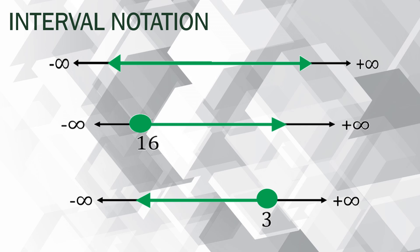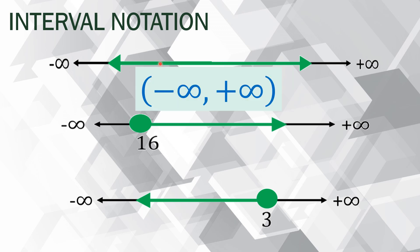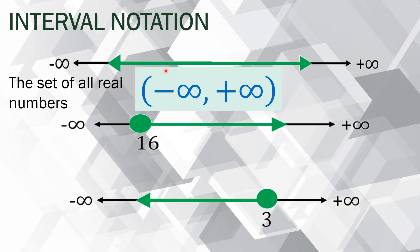Consider this real number line. There is a green line here representing the behavior of the numbers. There is an arrow as it moves to the right, and also an arrow as it moves to the left. So it means there is no restriction. We can say that the set of all real numbers are involved — no restrictions at all, no single element in the real number line is excluded from that particular domain or range.